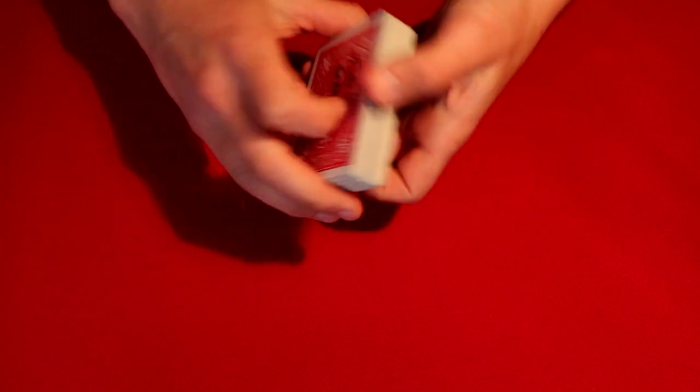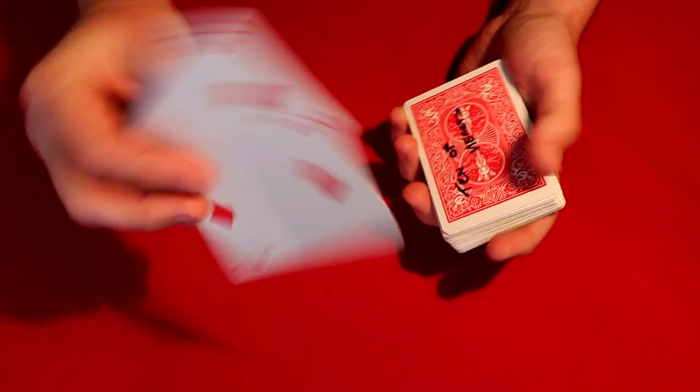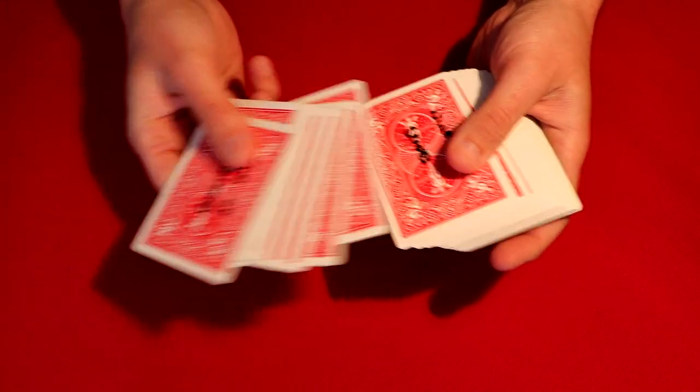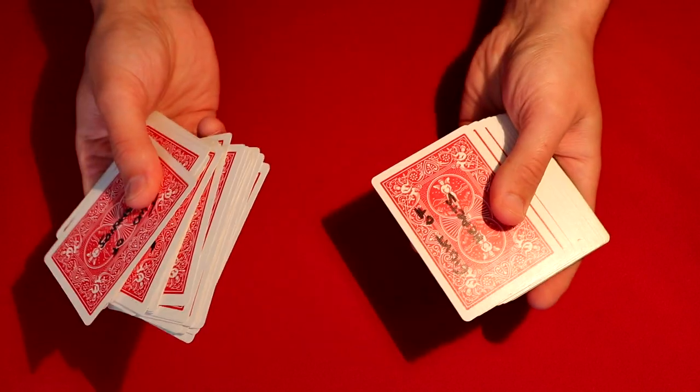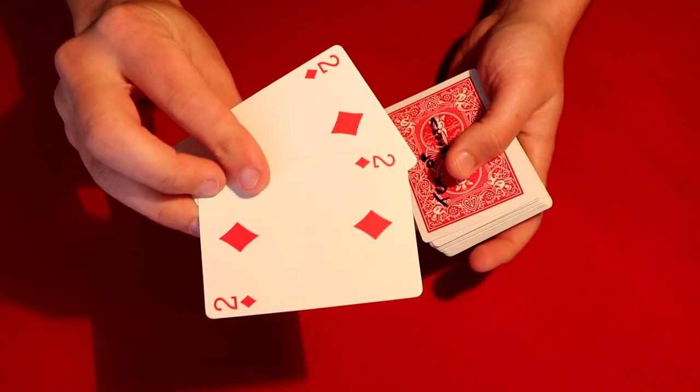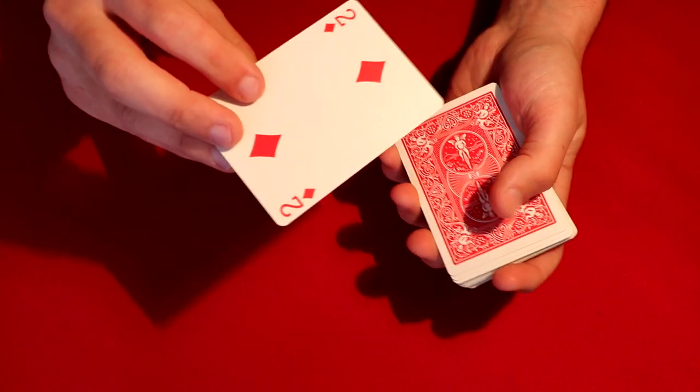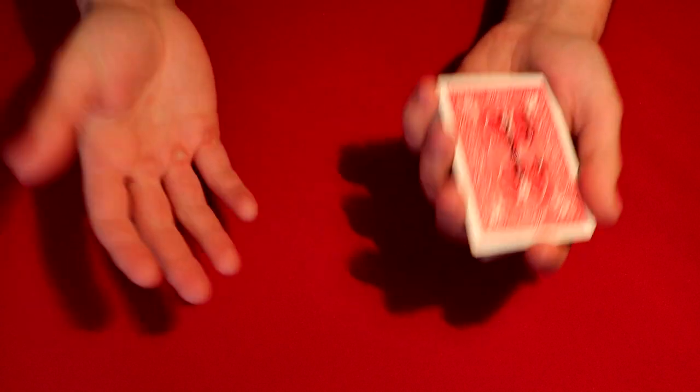To begin, you just need to have two duplicate cards. In this case, I have just two two of diamonds. Don't worry about the writing—this is from a different trick so that doesn't mean anything here. So take two cards, two duplicates, and put them right on top of the deck.